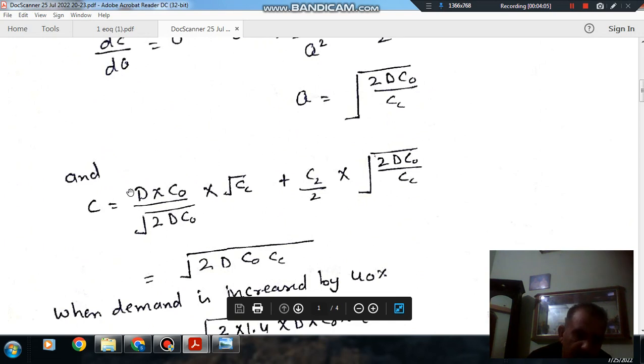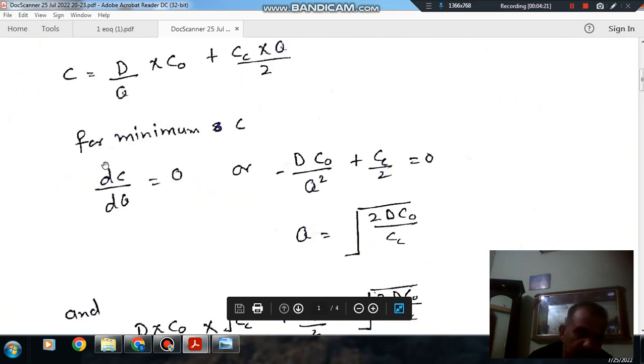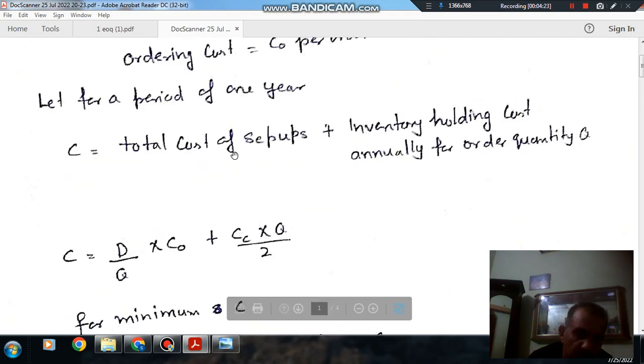If we multiply by 2 and divide by 2, then it will be root 2 by 2, and here is also root 2 by 2. So it is the square root of 2DC0CC. That is your variable cost, or we can say total cost of setup plus inventory holding.